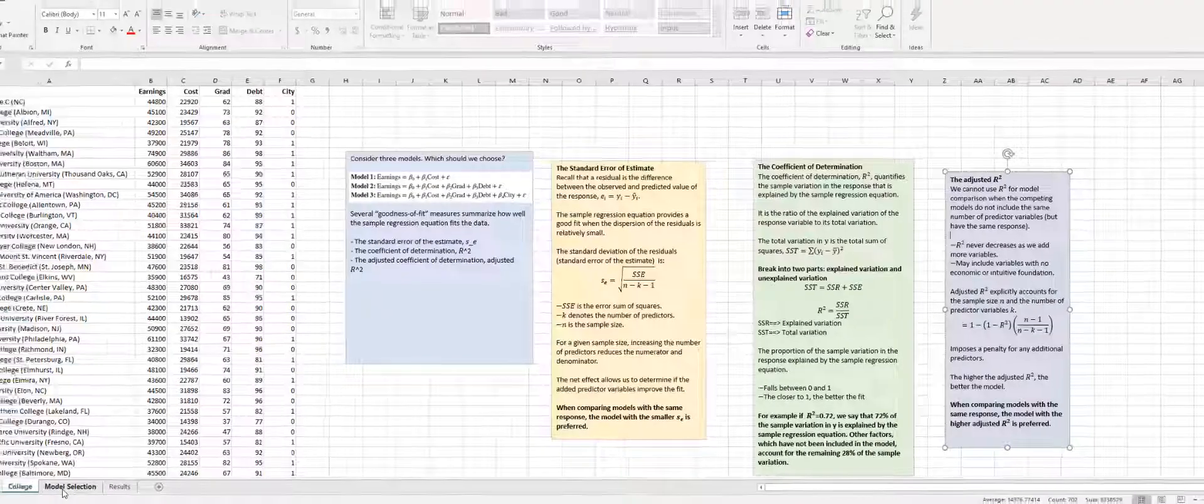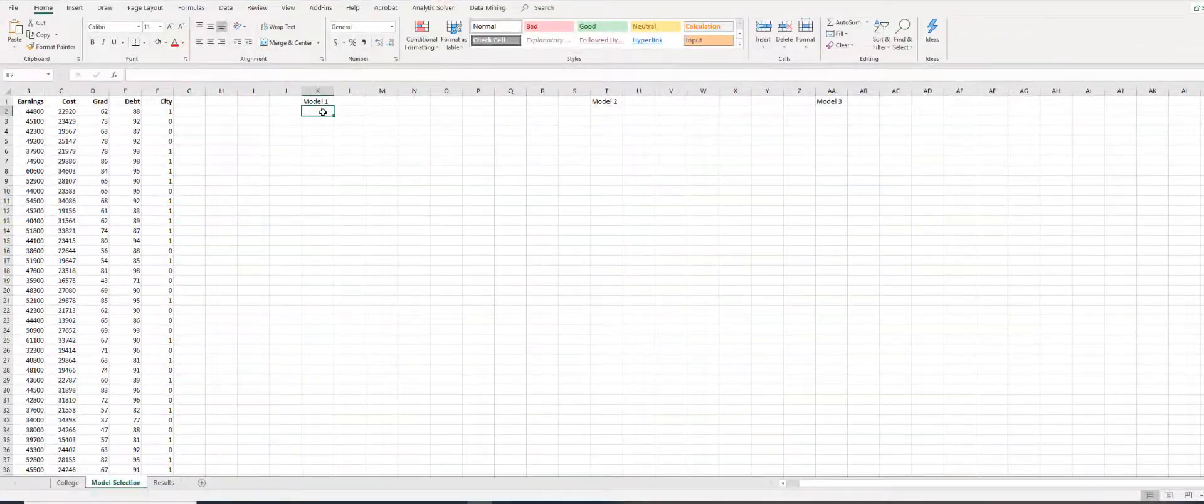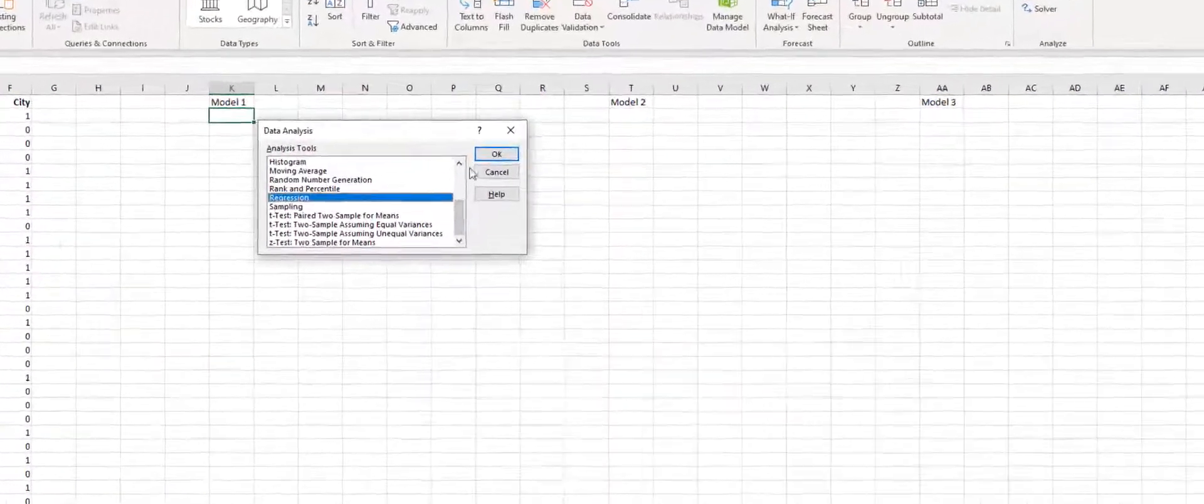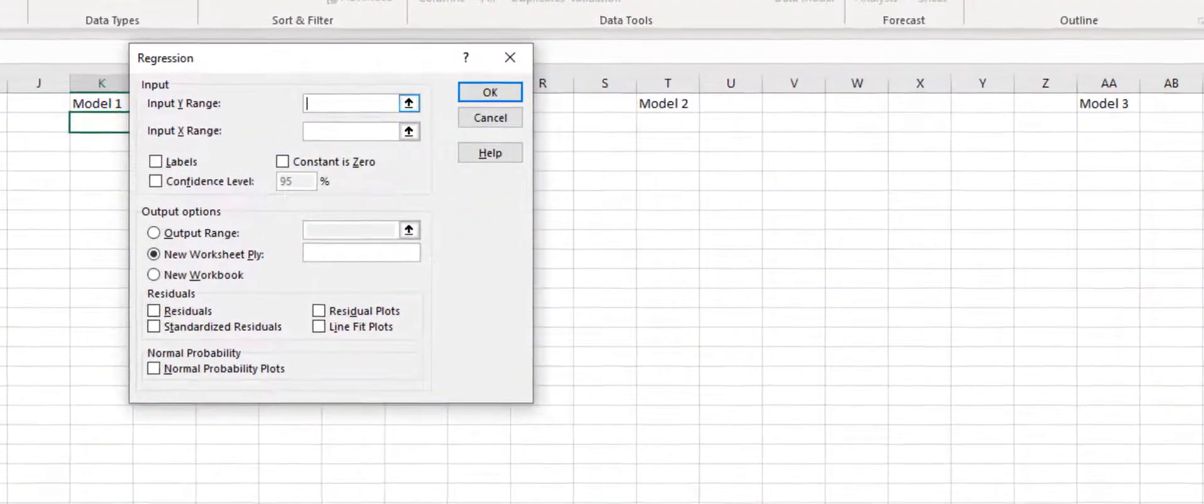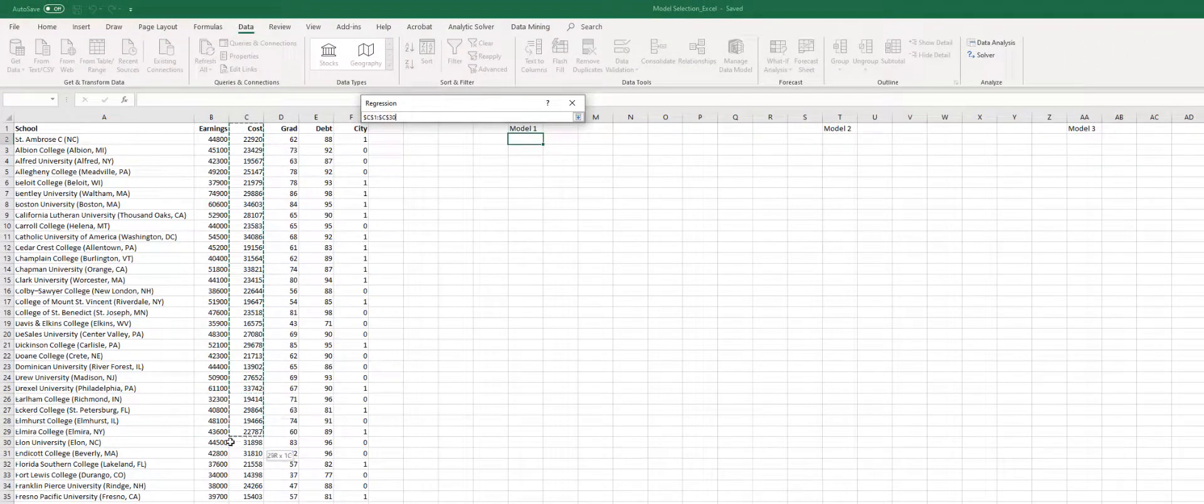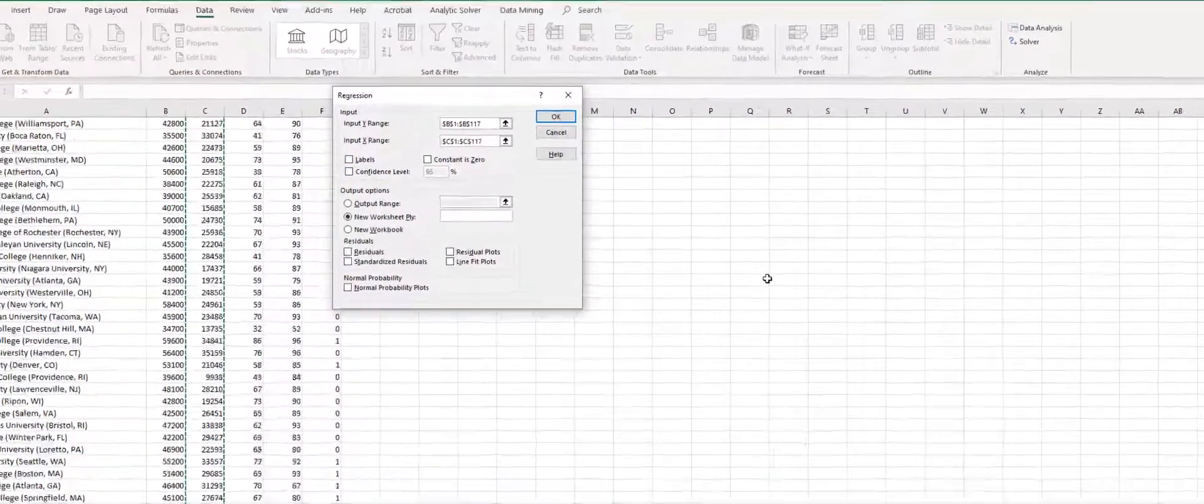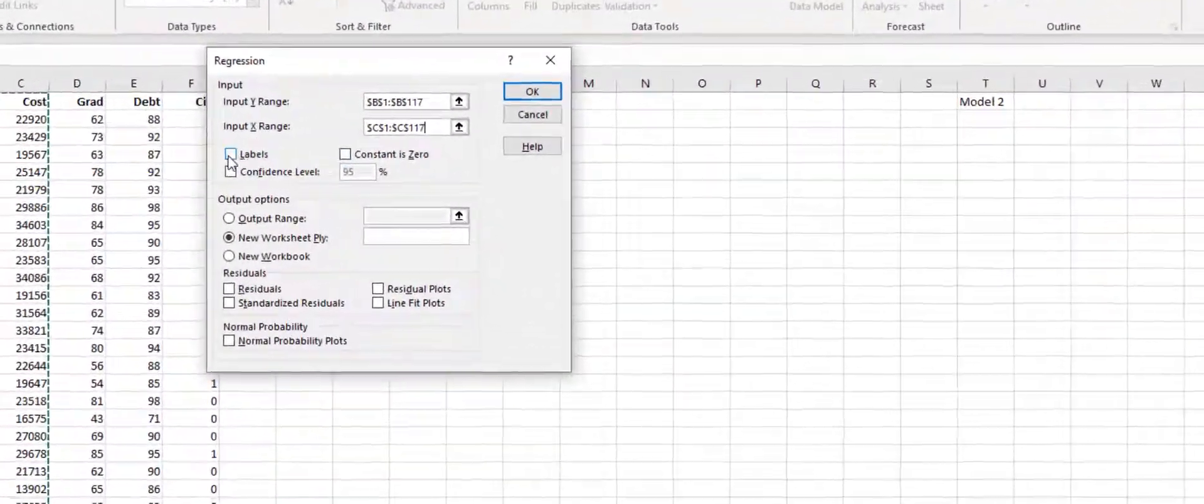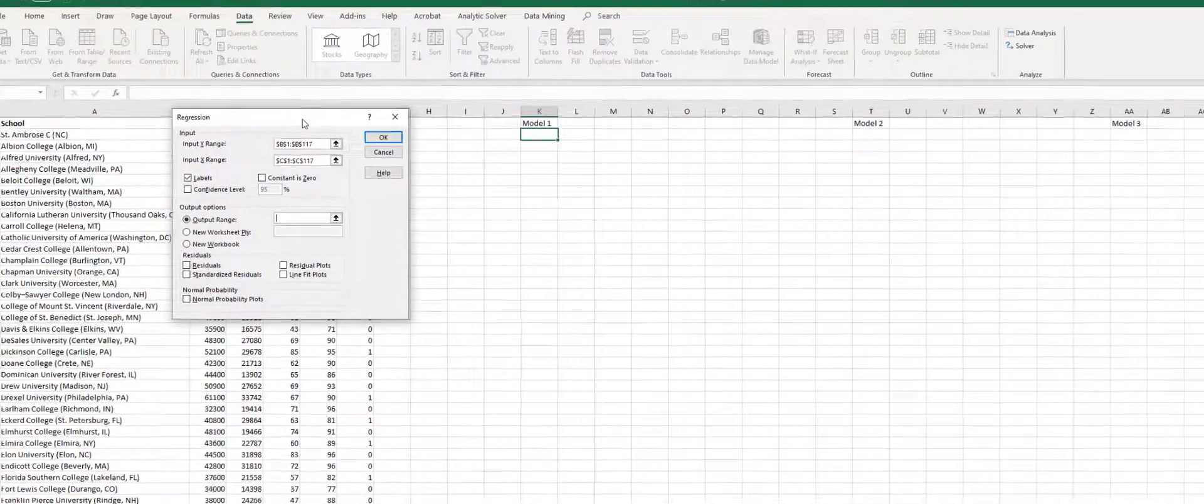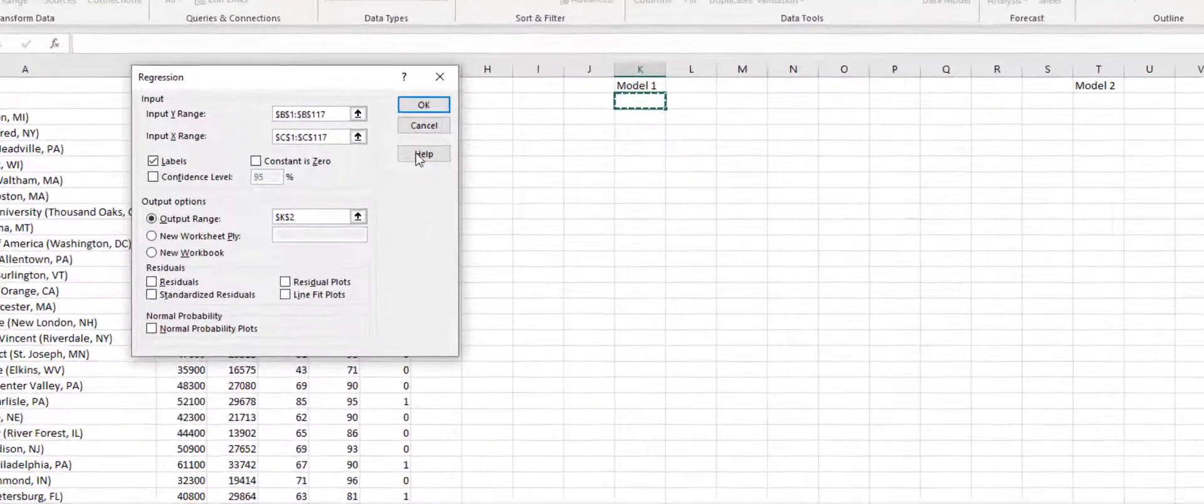Next, let's estimate our models. Here in model 1, only cost is going to be included to explain variations in earnings. So we are going to use data, data analysis tool pack, and then choose regression, and click OK. Our Y input range is earnings. Our X range is going to be cost only. And since we select the data with their headers, we are going to use labels. And let's choose output range. Output range is going to be here, and click OK.